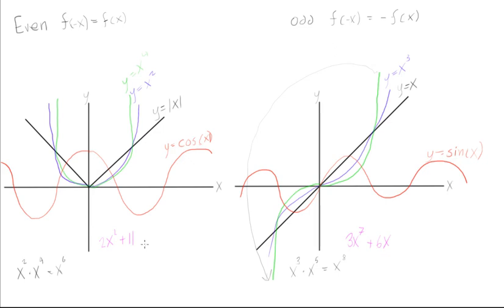And if you wanted to multiply an odd function by an even function, let's say, just keep it really simple, let's say we had x squared times x cubed. We would get x to the power of 5. And we would get an odd function by multiplying an even function to an odd function.